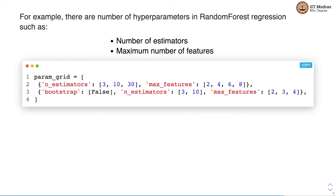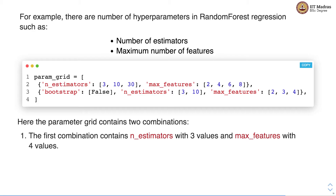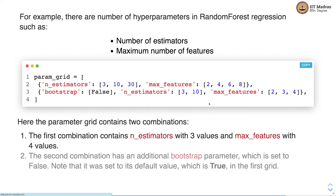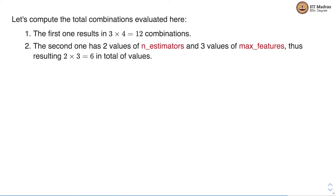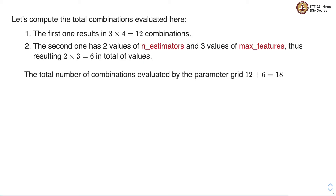So we specify here two sets of hyperparameter search problems. There are two combinations. The first combination contains number of estimators with three values and maximum features with four values. The second combination has an additional bootstrap parameter which is set to false. The first one has three values for number of estimators and four values for maximum number of features, leading to 12 combinations. The second one has two values of number of estimators and three values of maximum features, resulting in six combinations. The total number of combinations evaluated by the parameter grid is 12 plus 6, leading to 18 combinations.